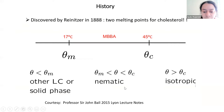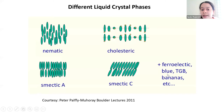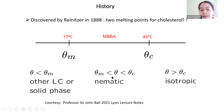Here is a picture borrowed from Professor Sir John Ball's lecture notes from 2015. MBBA is a very popular liquid crystalline material. It has a solid phase for low temperatures (less than theta_m), a liquid phase for temperatures large enough, and somewhere in between, for a range of temperatures, you will observe a liquid crystalline phase — a temperature-induced phase transition from the solid to the liquid via some intermediate liquid crystalline phases.